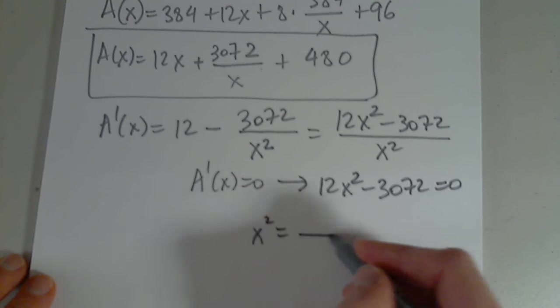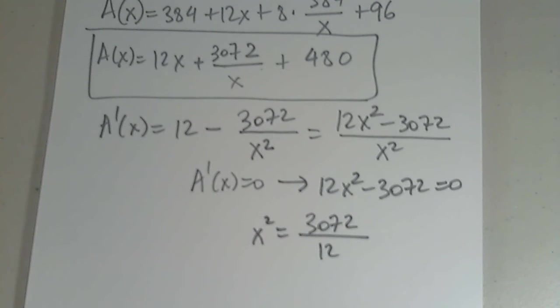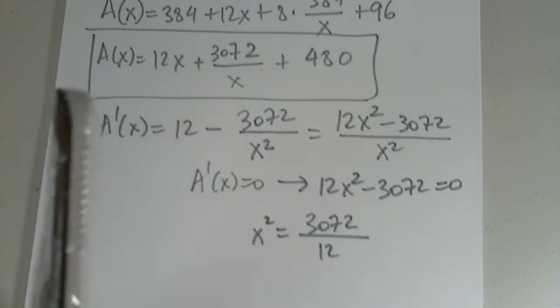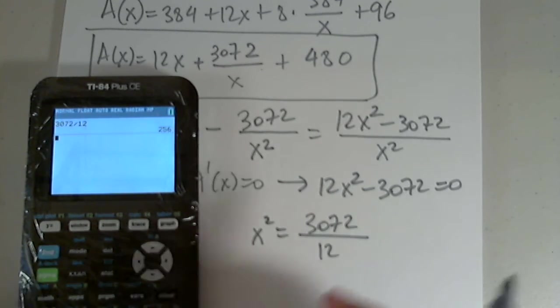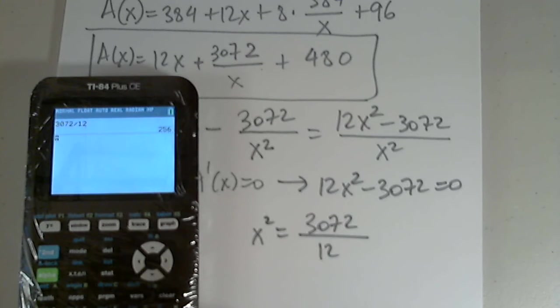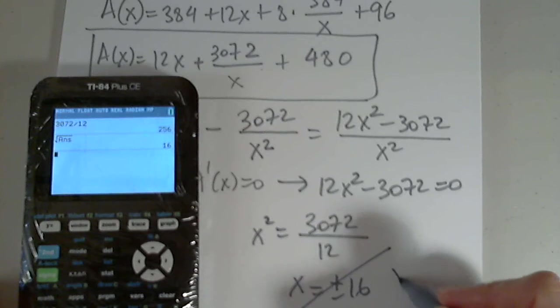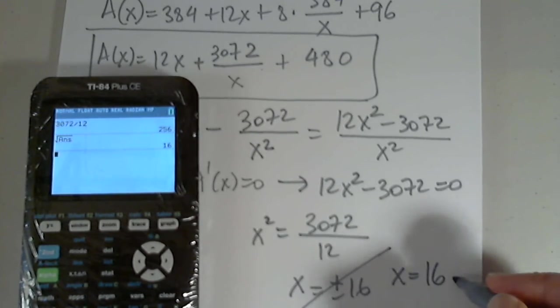So x squared is this. So 3072 divided by 12. I get 256. And when I take the square root of 256, that's a good one. I love it. So then x equals plus or minus 16. Of course not. This is, these are the correct algebraic answers, but only 16 centimeters.